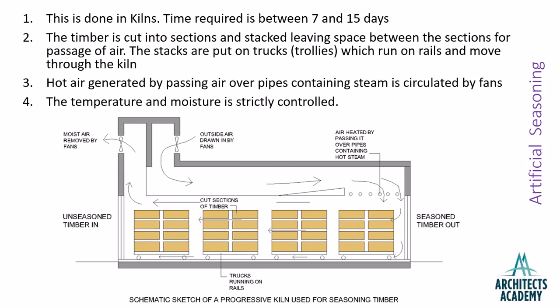The last process is called artificial seasoning. In artificial seasoning, the process takes place very fast — the time required is between 7 and 15 days. This is done in kilns. The timber is cut into sections and stacked leaving space between the sections for passage of air. The stacks are placed on trucks — that is, trolleys which run on rails — and move through the kiln. Hot air is generated by passing air over pipes containing steam and is circulated by fans.